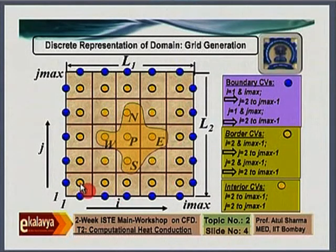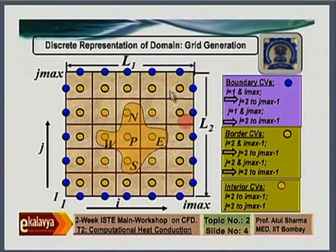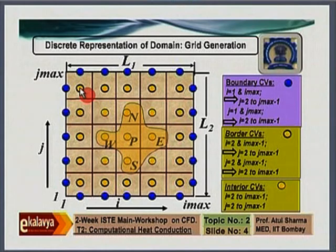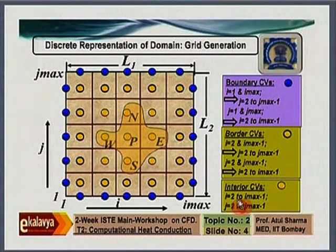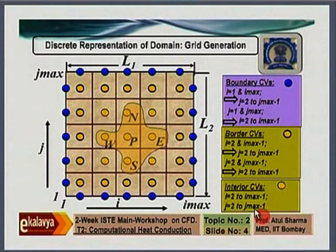There are 25 interior control volumes — 5 in the x direction and 5 in the y direction. The running indices to scroll through those 25 yellow circles are: i equals 2 to imax minus 1 (which is 2 to 6), and j equals 2 to jmax minus 1 (which is 2 to 6). So you scroll 5 points in the x direction and 5 points in the y direction.